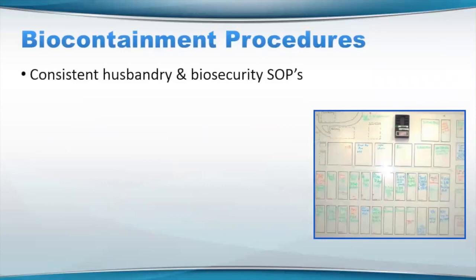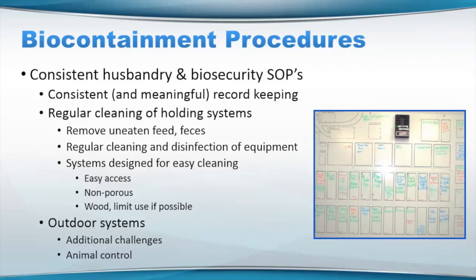Biocontainment procedures will include good husbandry and good standard operating procedures for biosecurity, just like we discussed with exclusion. With both exclusion and biocontainment, you want to have very good and meaningful record keeping. You want to really have good regular cleaning of your holding systems — removing feces and uneaten feed, regular cleaning and disinfection. And really, ideally before you design or build a facility, you really want to look at ease of cleaning. Some producers will have pipework that they can easily valve open and blow out larger pipe sections. Things like that, or having things that are much easier access for your staff to get into and clean — if it's difficult, the staff are going to be much less likely to do it.